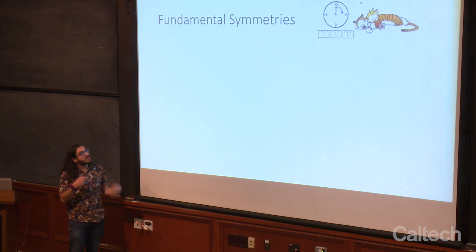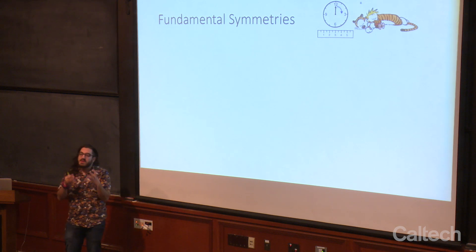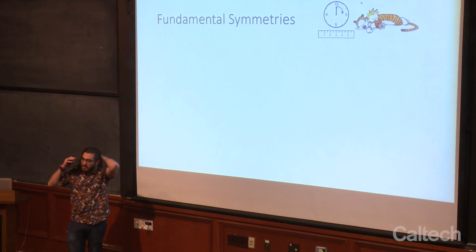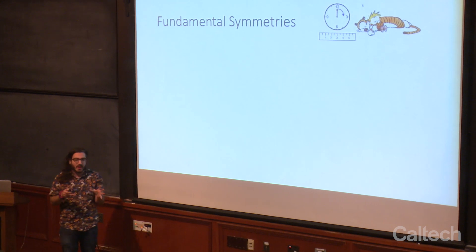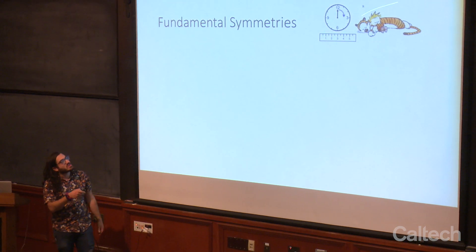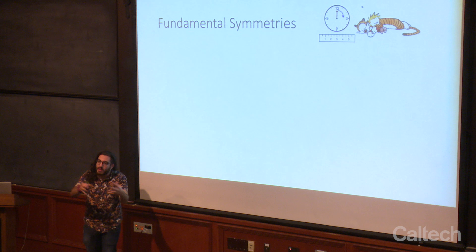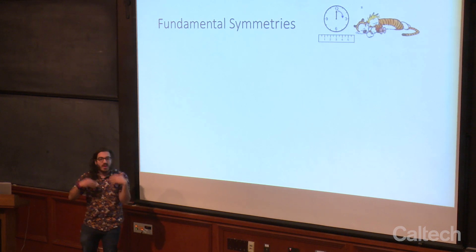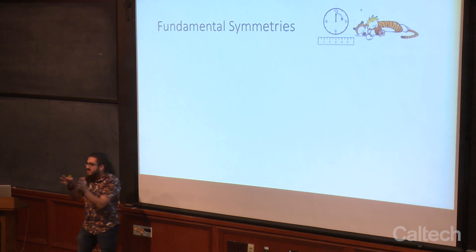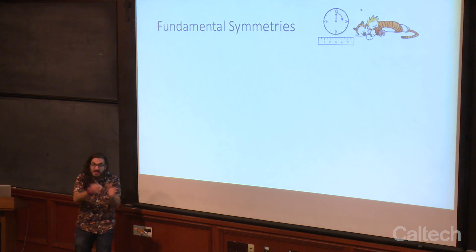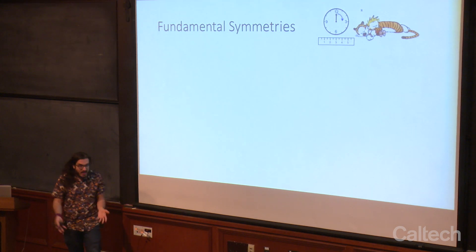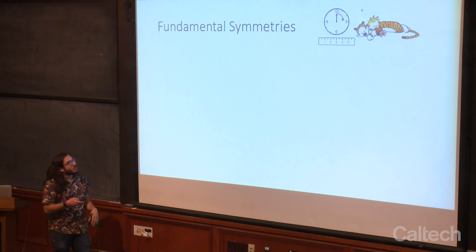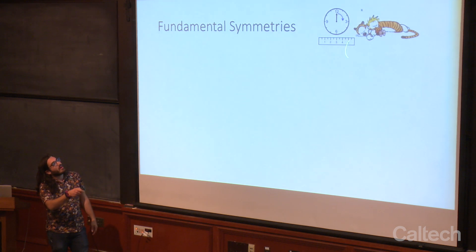Physicists care about really fundamental symmetries — the most basic symmetries you can think of. The way we conceptualize these is: imagine you're sleeping and someone applies some operation to the universe, and then you wake up. Can you do an experiment to tell the difference? If you can tell the difference, then that's not a symmetry. If you can't tell the difference, then it is a symmetry. So here you're sleeping with a clock and a ruler.